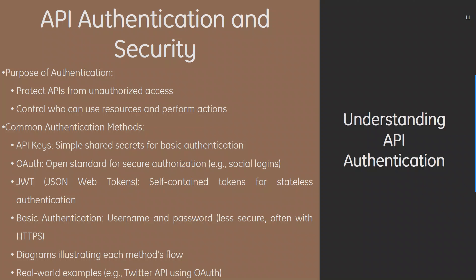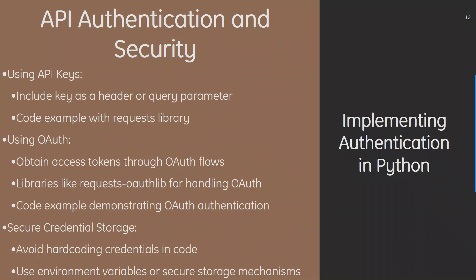A diagram illustrates each method's flow, with real-world examples such as Twitter using OAuth. For implementing authentication in Python, API keys can be passed as a header or file parameter, with code examples using the requests library. For OAuth, you obtain access tokens through OAuth flows using libraries like requests-oauthlib for handling OAuth, with code examples demonstrating OAuth authentication.